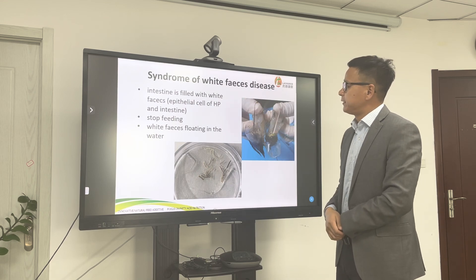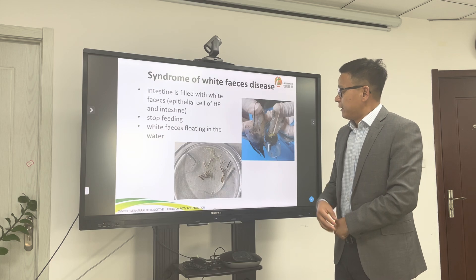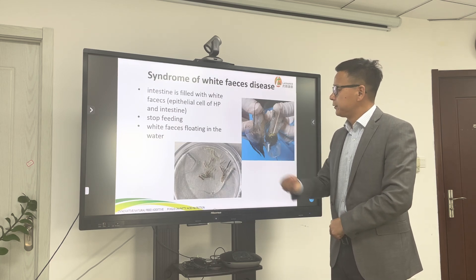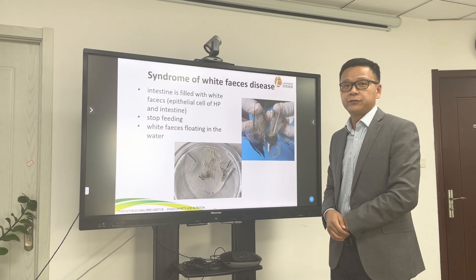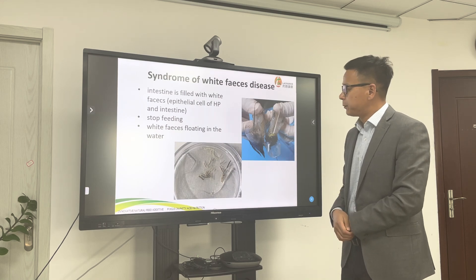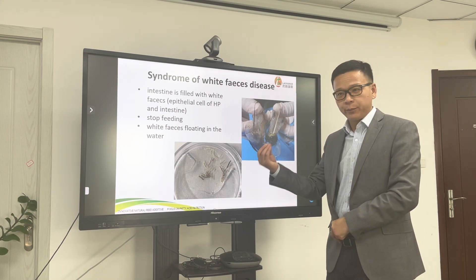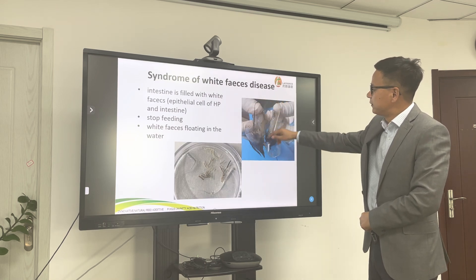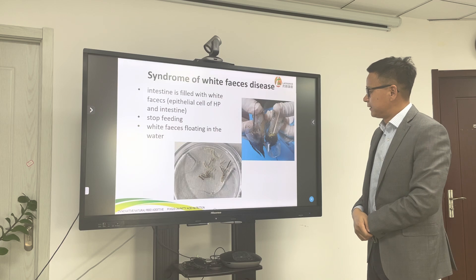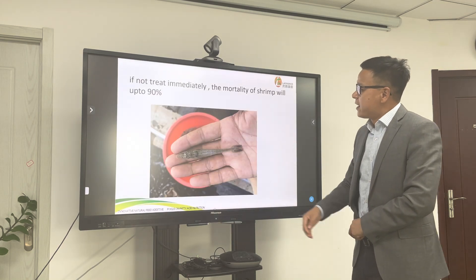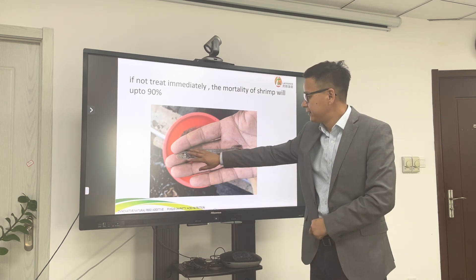The following disease is white feces. At the beginning, feces look normal. But actually the intestine is not filled with real feces — it's the epithelial cells of the hepatopancreas and the intestine that are shed. The shrimp also stops feeding, and white feces will be floating in the water. This shows the normal healthy intestine compared to one filled with white feces. If not treated immediately, the mortality of shrimp will be up to 90%.